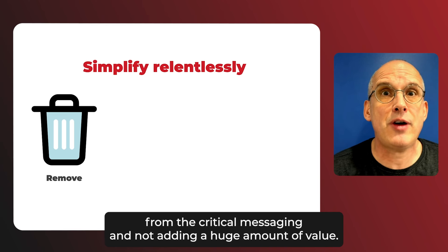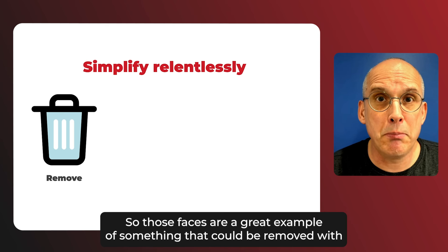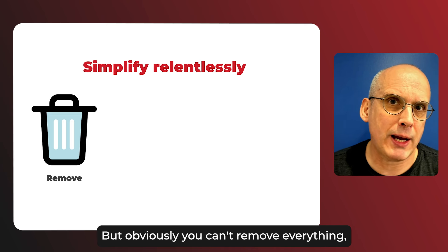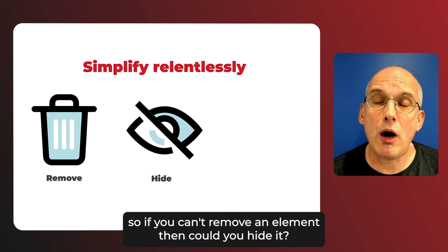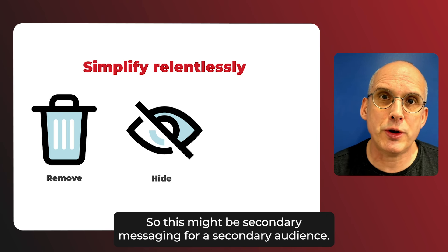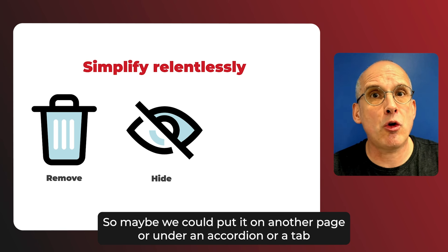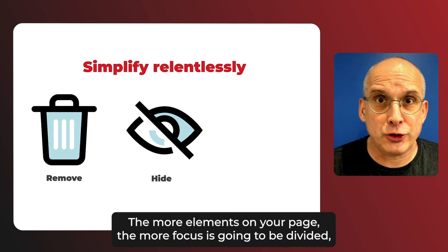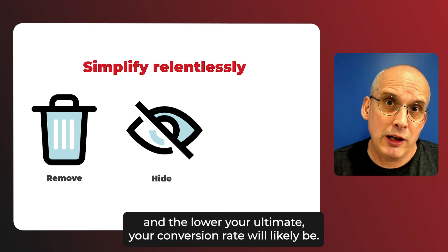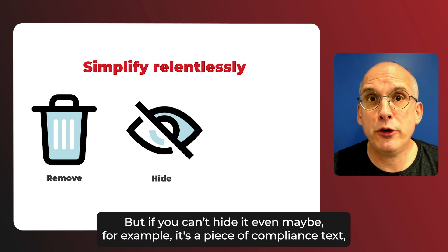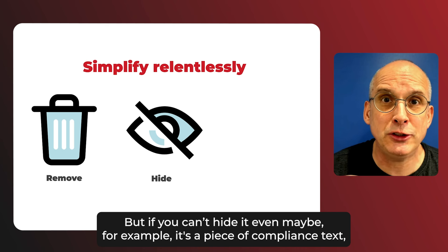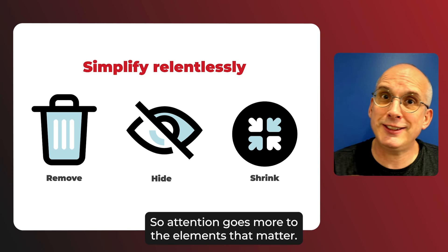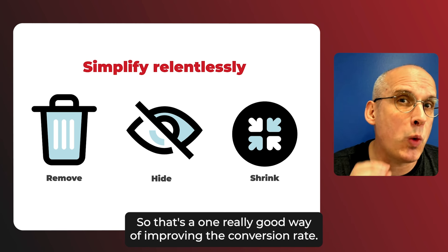On the CXL home page, there were a load of faces pulling attention away from the critical messaging without adding much value — so those faces are a great example of something that could be removed, probably improving conversion rather than undermining it. But obviously you can't remove everything, so if you can't remove an element, could you hide it? Maybe secondary messaging could go on another page or under an accordion or tab to remove distractions. The more elements on your page, the more focus is divided and the lower your conversion rate will likely be. And if you can't hide it — for example, compliance or legal text — can you shrink it or de-emphasize it so attention goes to the elements that matter?